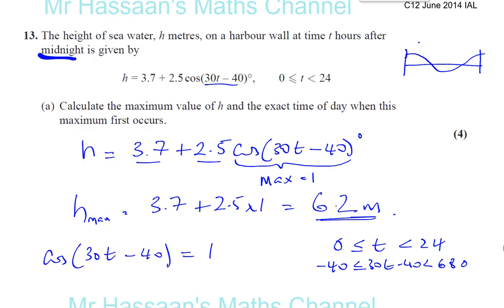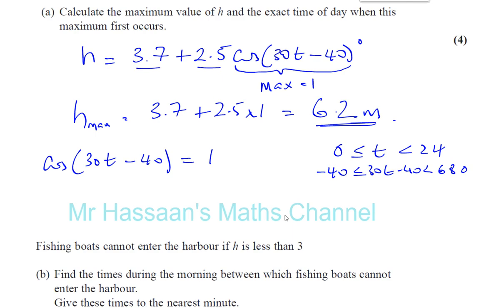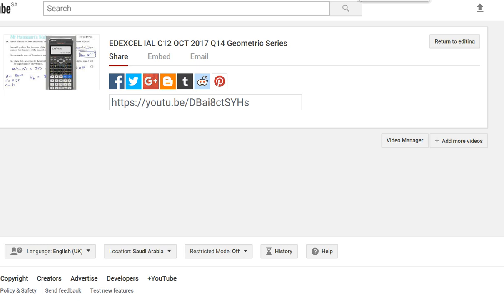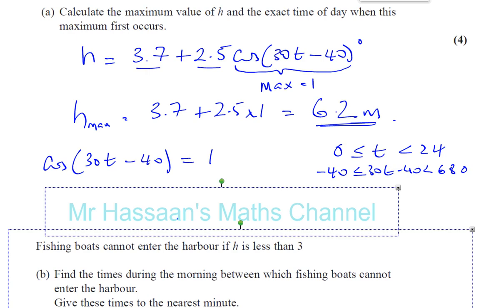So those are the limits that we've got to find these angles for. But we don't really have to worry about that too much, seeing as we're told to find when it first occurs. We only need one solution, and the one that's closest to 0, obviously.